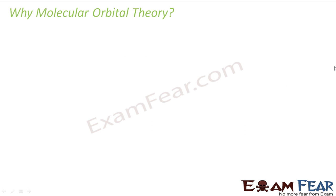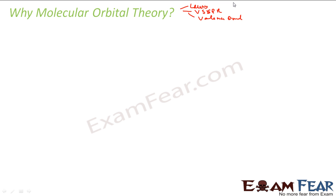Let's start with molecular orbital theory — the last theory. The question is: why do we need to study this theory? We already have so many theories. We have learned the Lewis theory, the VSEPR theory, and the Valence Bond theory. So why do we need molecular orbital theory?